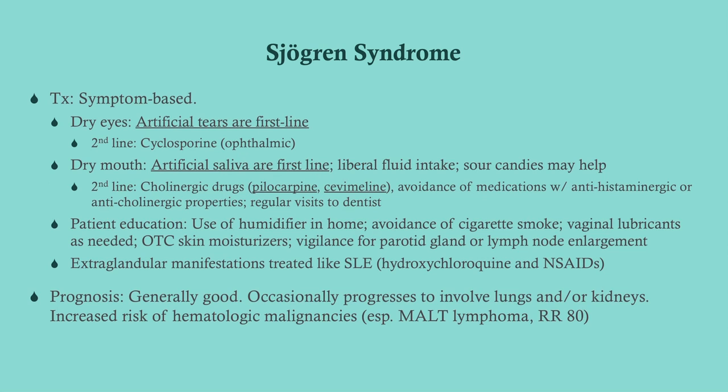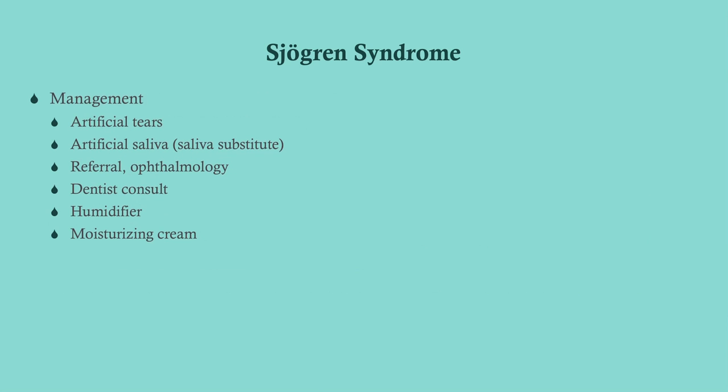Other measures include sour candies and gum to stimulate saliva, humidifiers, and moisturizers. Women may develop vaginal dryness, itching, and dyspareunia due to glandular involvement — vaginal lubricants can help; estrogen would not. Extra-glandular manifestations such as myalgias and arthralgias are treated like lupus — hydroxychloroquine and NSAIDs. The main prognostic concern is hematologic malignancy: non-Hodgkin's MALT lymphoma carries about an 80-times relative risk increase.